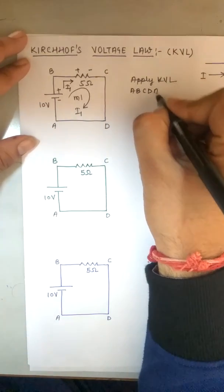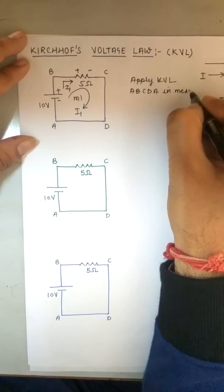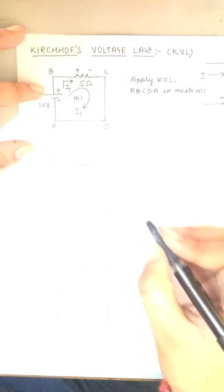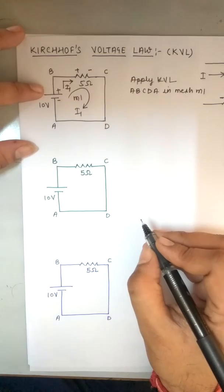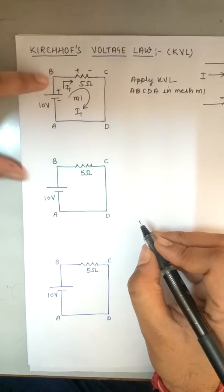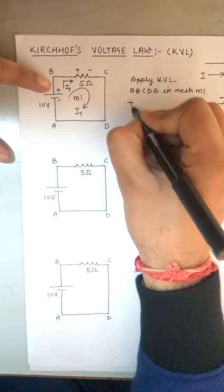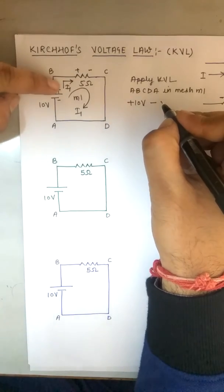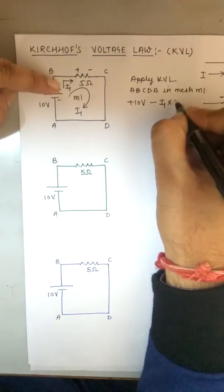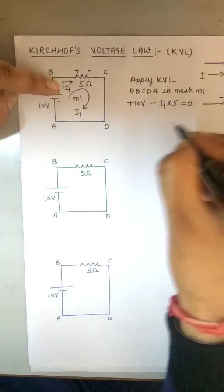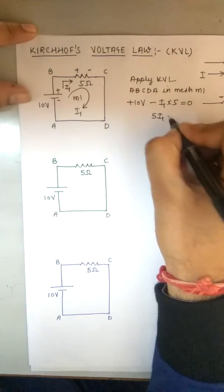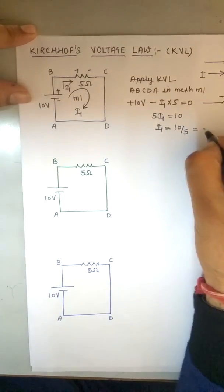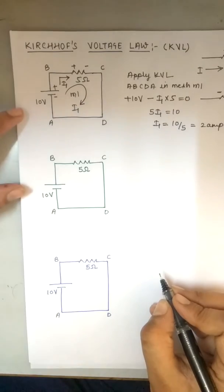Now apply KVL starting from a, b, c, d, a — mesh M1. Starting from point a, pick the polarity of each element. Traveling from a to b, the last polarity encountered is plus, so plus 10 volts. Next terminal is minus, so minus I times R: the current in this resistance is I1 and the resistance is 5 ohm, equals zero. Solving: 5·I1 = 10, so I1 = 10/5 = 2 amperes.